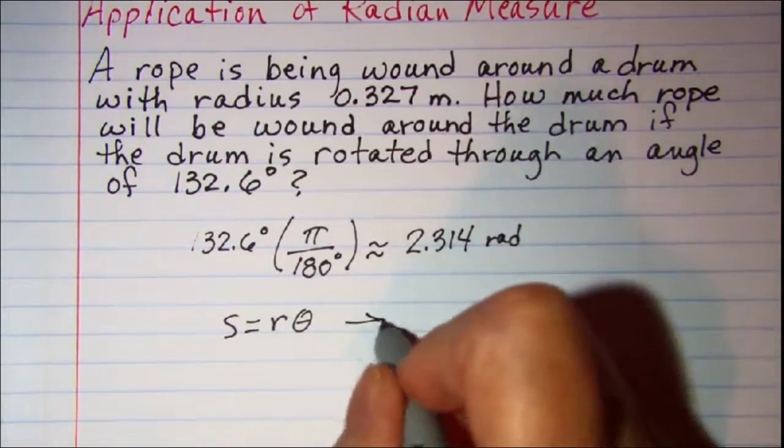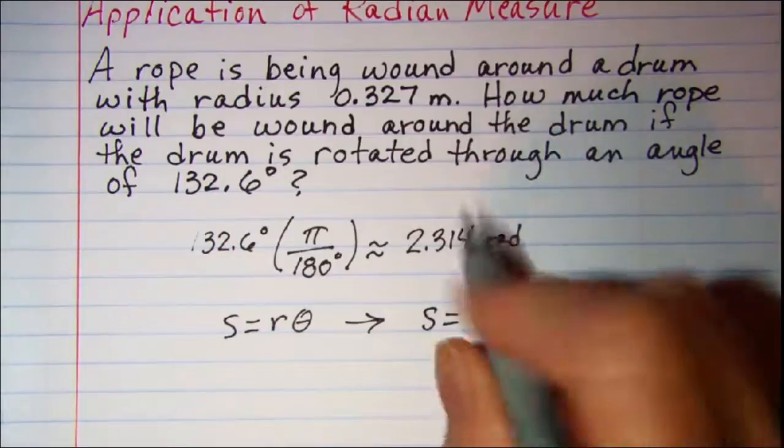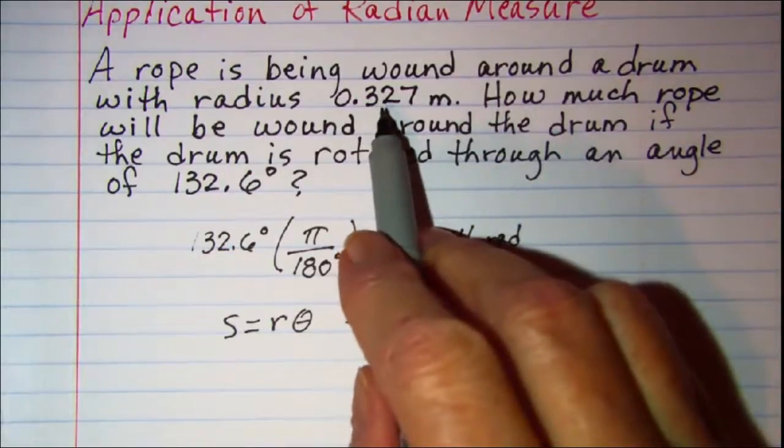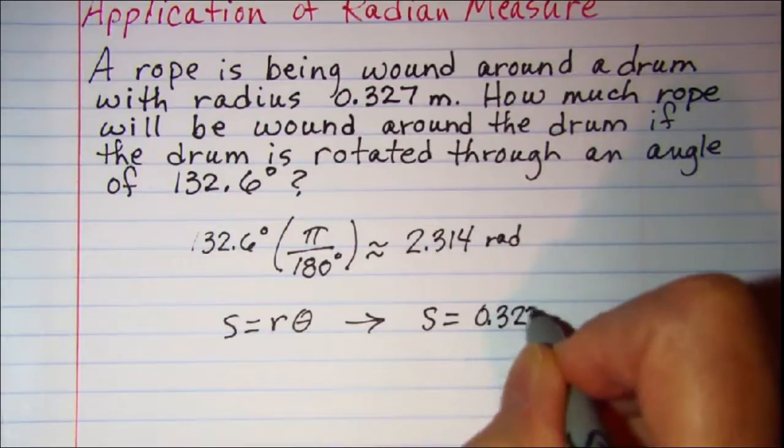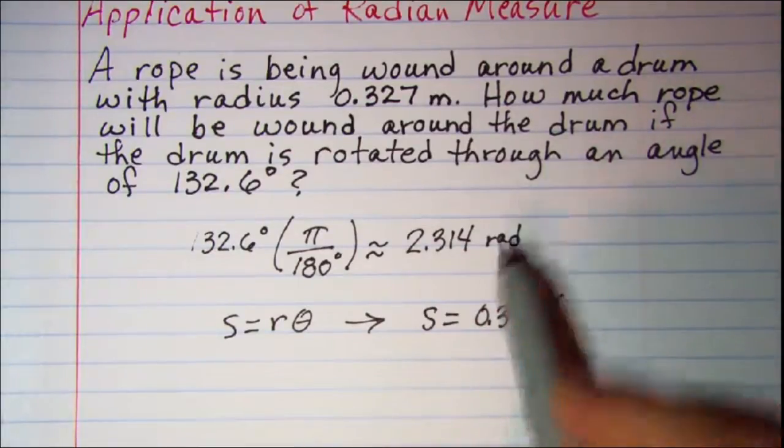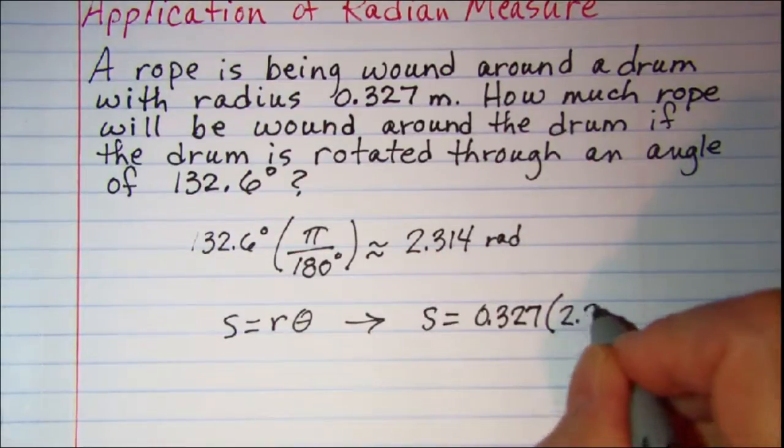So we can use that formula and get s equals the radius, which is 0.327, multiplied by the angle in radians, 2.314.